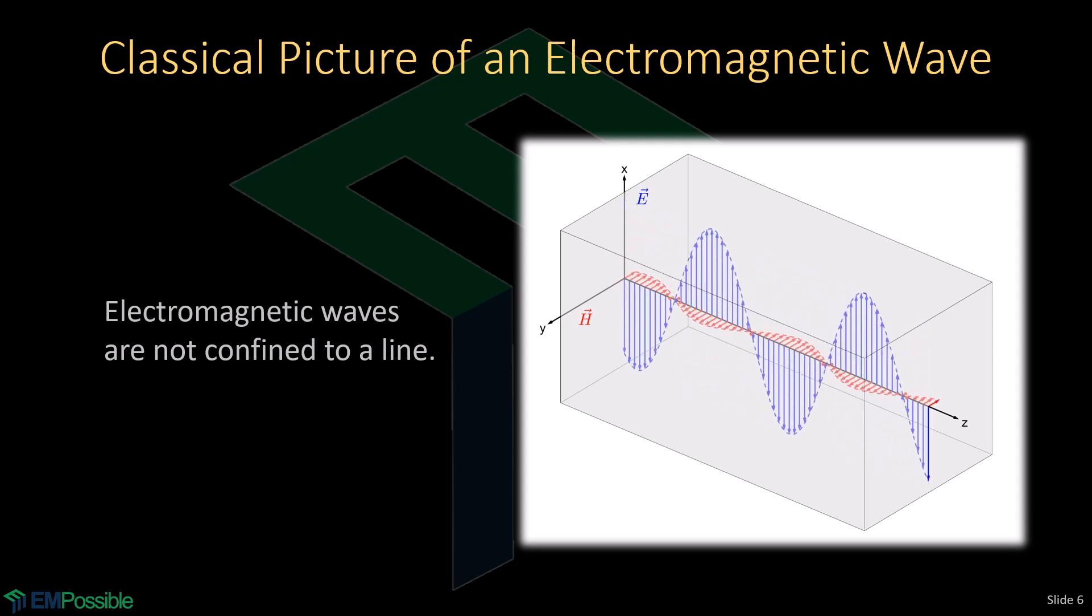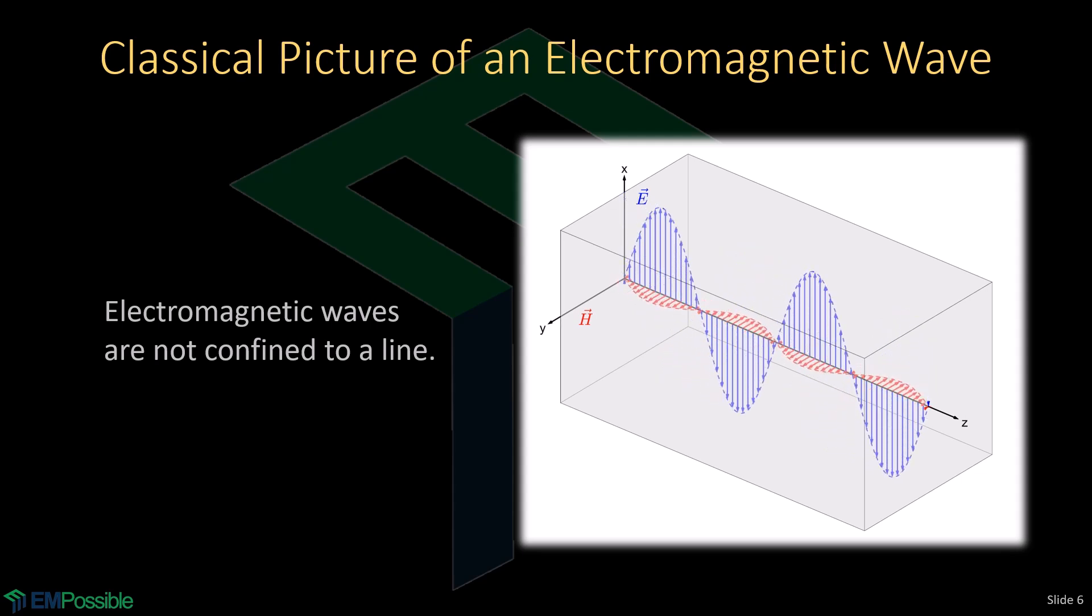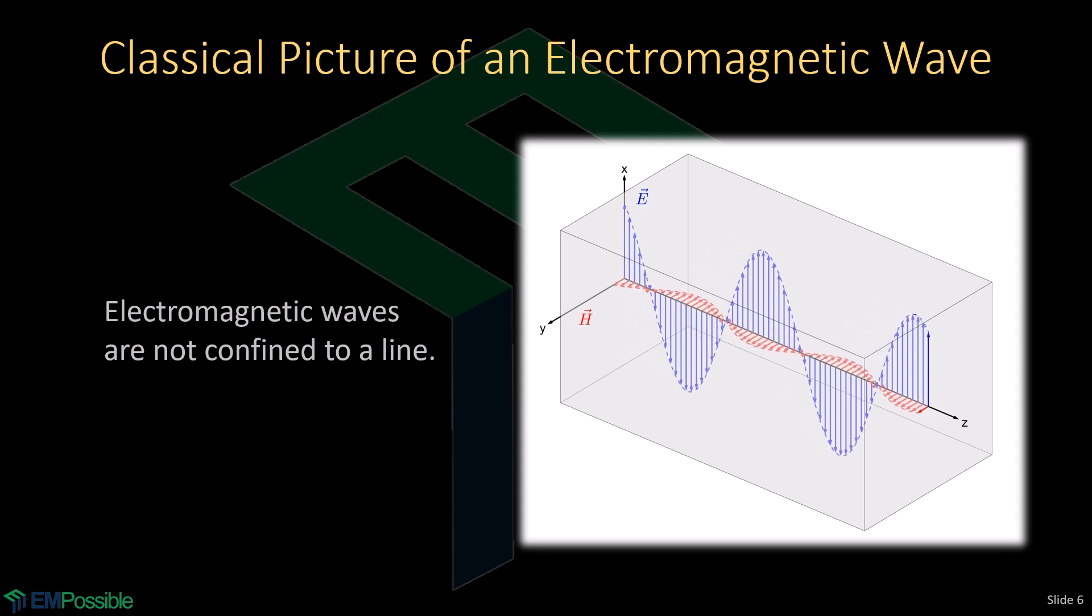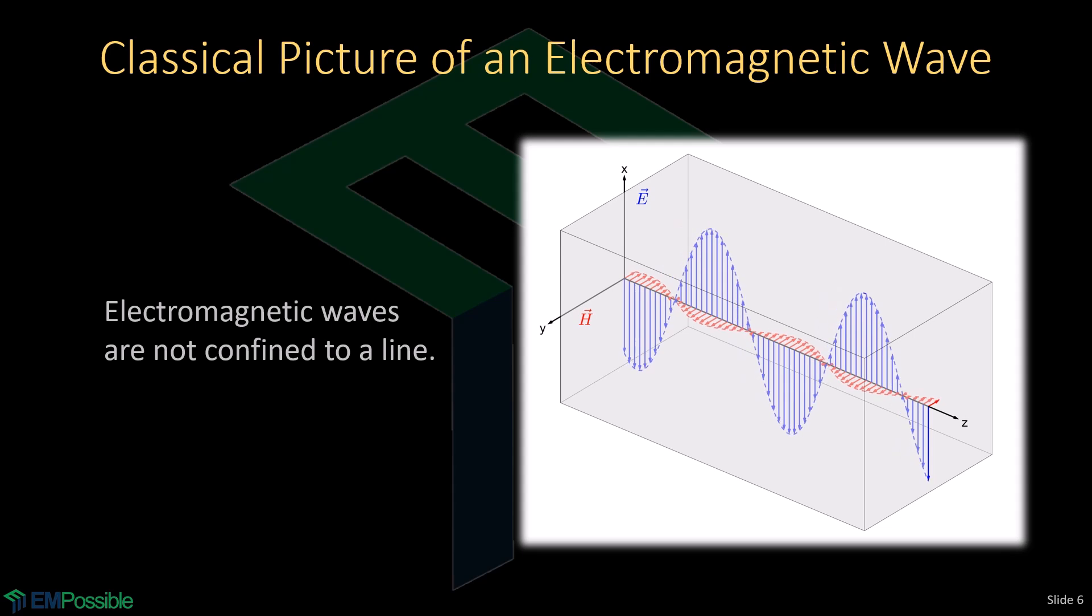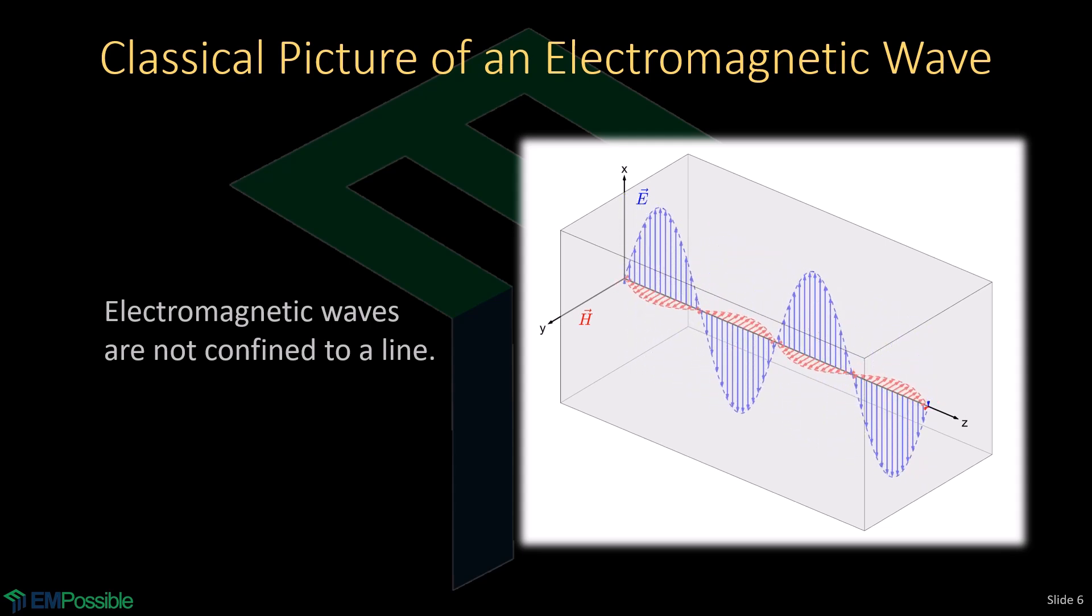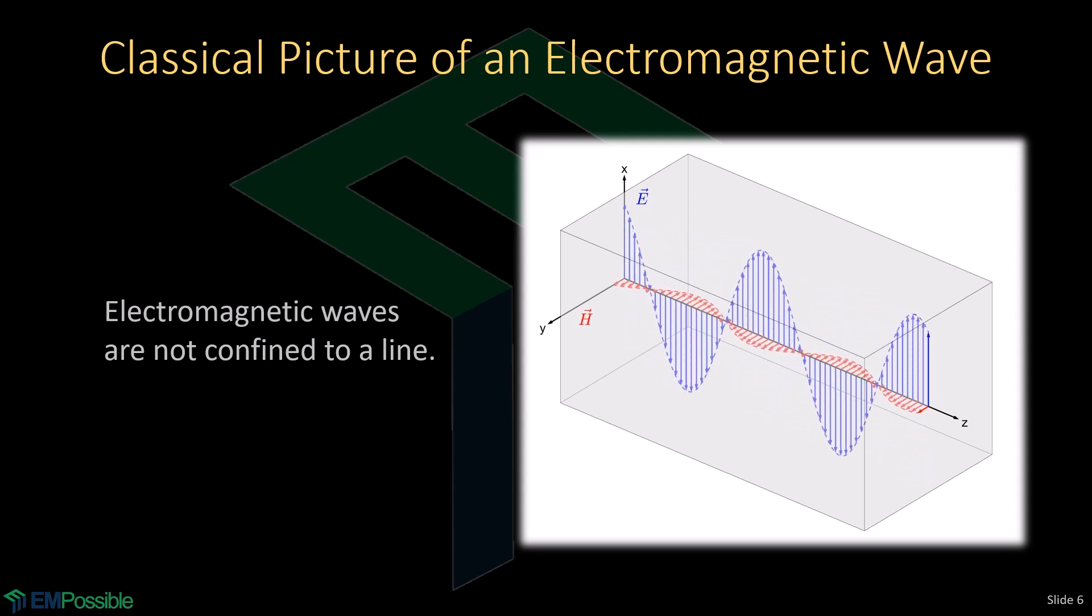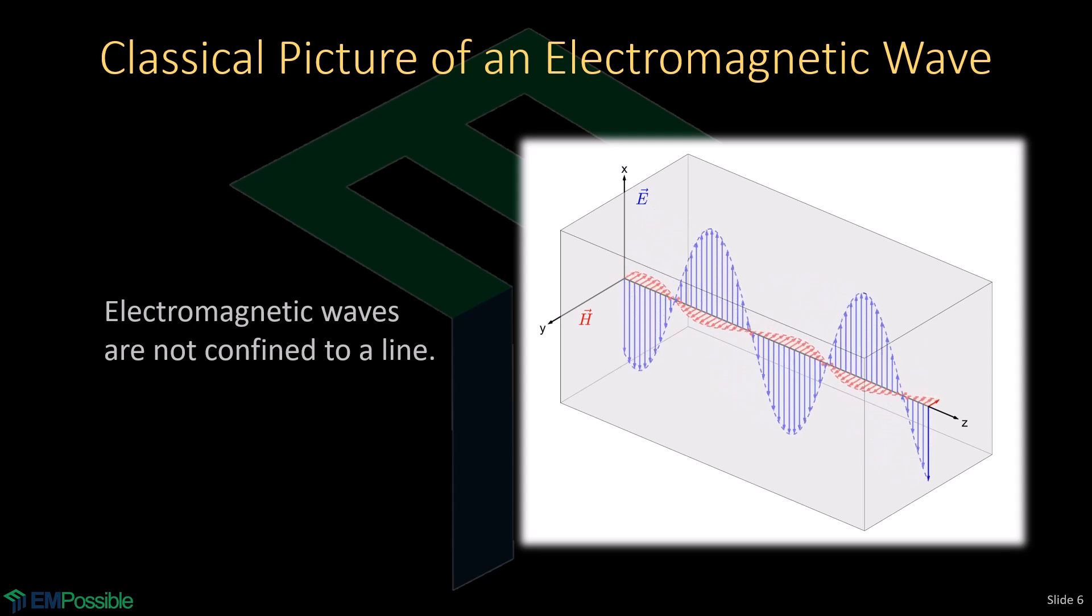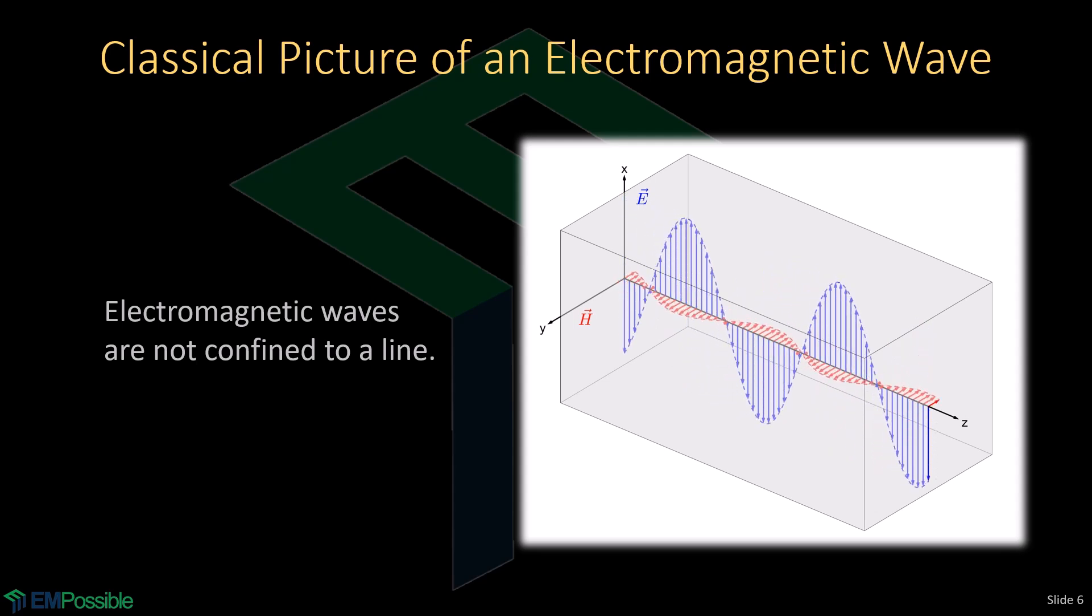And there's some problems when we draw this that a beginner might fall into. For example, we might seem to think that this phenomenon is confined to the z-axis. And that's not true. Waves are volumetric things. They extend smoothly and continuously off of that z-axis. It just becomes very difficult to draw. So instead, we draw what is happening exactly on the z-axis and just imply that any position x and y is going to look the same.